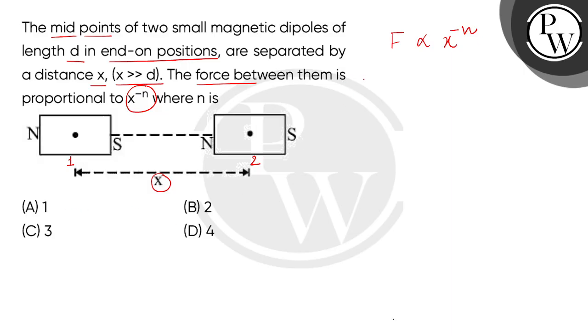If we want to check the magnetic field due to a dipole, it is inversely proportional to the cube of the distance from the center of the magnet. Here we have the interaction energy that will be minus mb, that is minus mb cos theta.